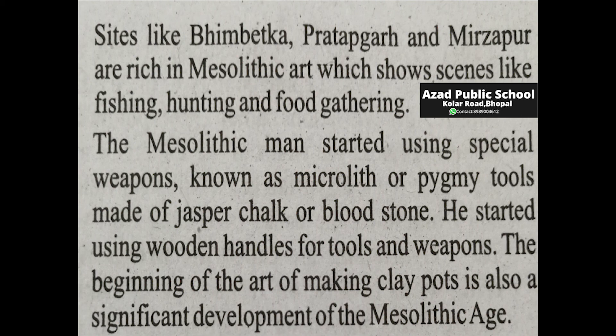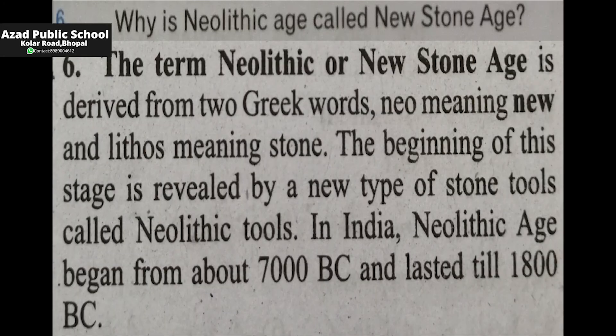Sixth question: why is the Neolithic age called the new stone age? The term Neolithic or new stone age is derived from two Greek words — 'neo' means new and 'lithos' means stone. The beginning of this stage is revealed by a new type of stone tools called Neolithic tools. In India, the Neolithic age began from about 7,000 BC.